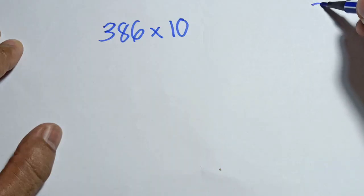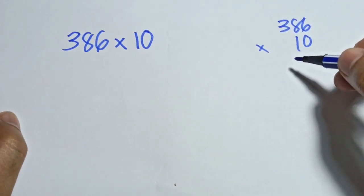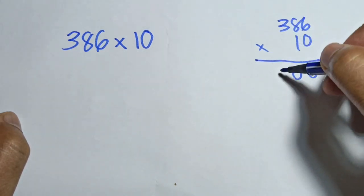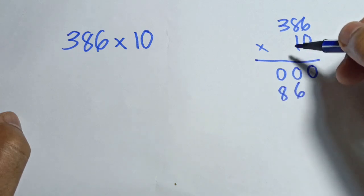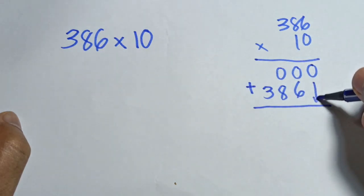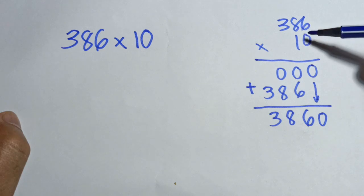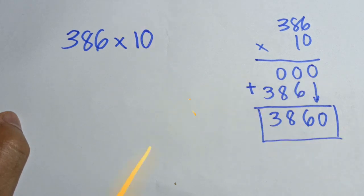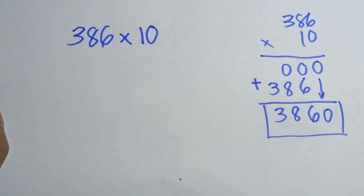In the traditional way, we do 386 times 10. So 0 times 6 is 0, 0 times 8 is 0, 0 times 3 is 0, and 1 times 6 is 6, 1 times 8 is 8, and 1 times 3 is 3. Then we add it — bring down 0 and 6, 8, 3 — so 386 times 10 in the traditional way gives us 3860.